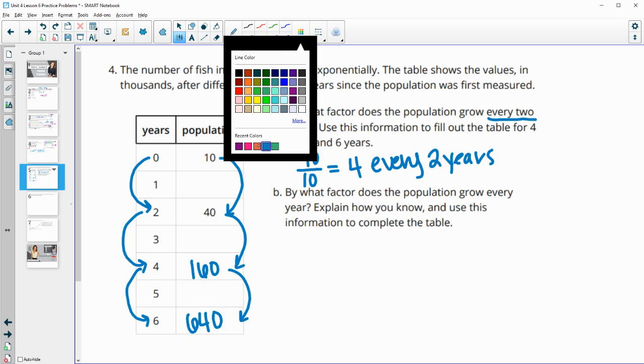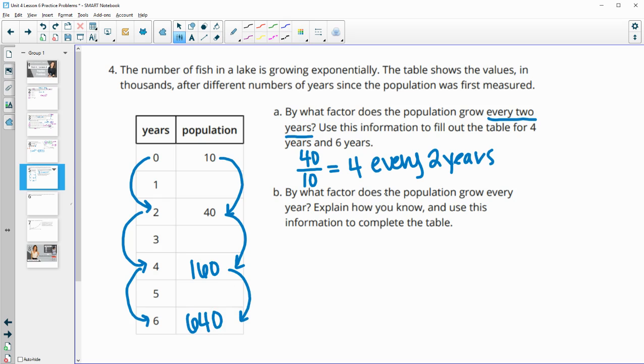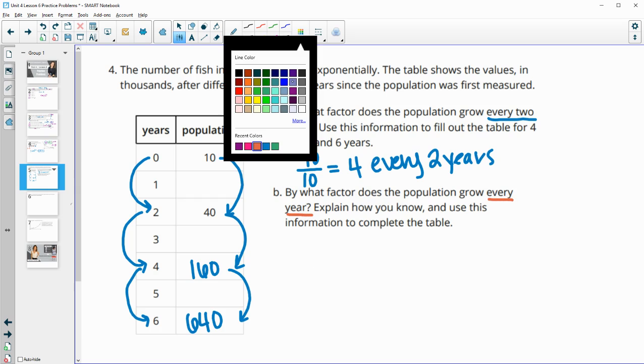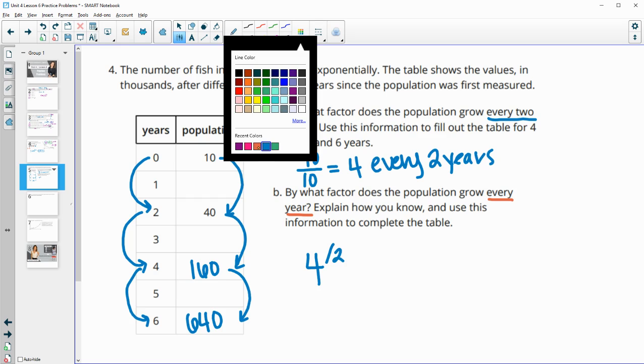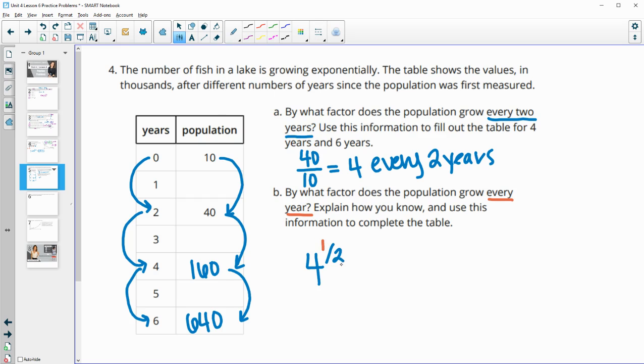So now in the next part, it asks us by what factor does the population grow every one year? So now we're going to take the two year growth factor. And instead of having it every two years, we want every one year. So one out of two years. So we'll do four to the one half power, which is really the same as the square root of four. So this is giving us a growth factor of two every one year.